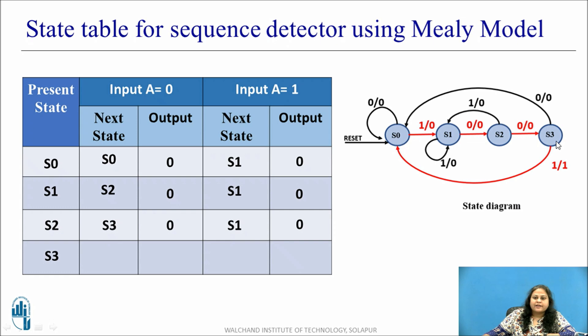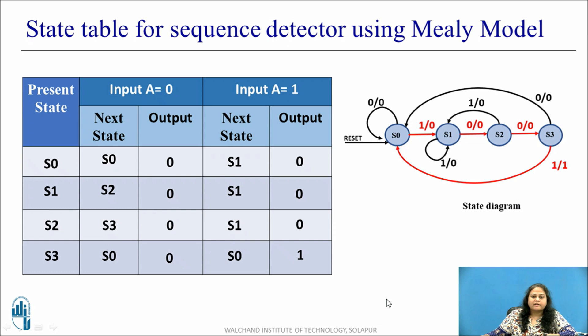Finally consider state S3. In S3 if the input is 1, the output is 1 and the next state is S0. When the input is 0, the next state is S0 but the output is 0. So S3 with input 0: next state S0, output 0; S3 with input 1: next state S0, output 1. This is how, based on the state diagram, the state table for a sequence detector is obtained.